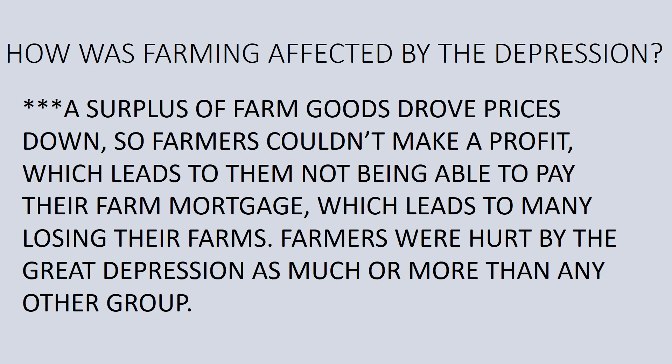How was farming affected by the Great Depression? There was a surplus of farm goods during the 1930s because farmers had all this product, but people now had less money to buy things. A surplus of goods drives prices down, which is good for the consumer that needs food, but bad for farmers who can't make a profit. If farmers can't make money on their products, they can't pay their farm mortgage — they lose the farm. Farmers were hurt by the Great Depression as much as maybe any other group.